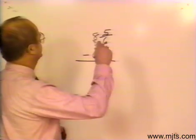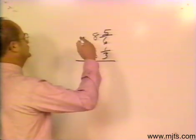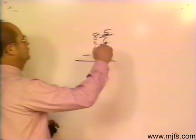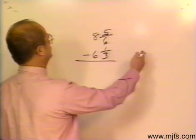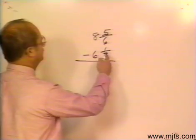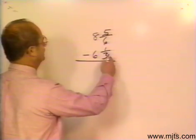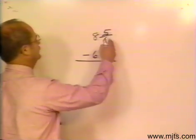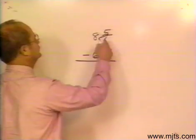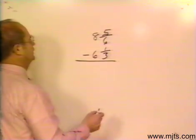The same thing is true for subtraction of fractions as it was for addition of fractions. Here again, we have to work with like denominators. We have to work with equal values in our fractions before we can subtract the numerators.